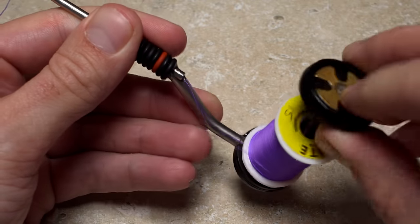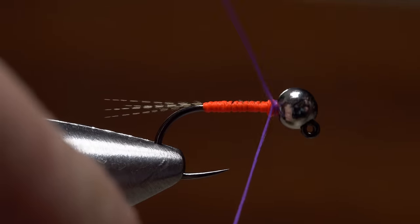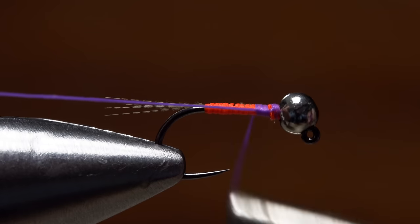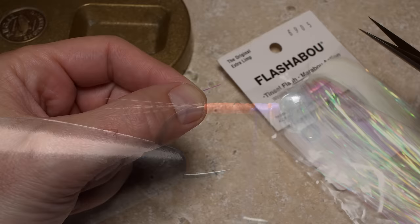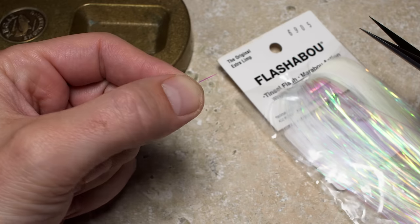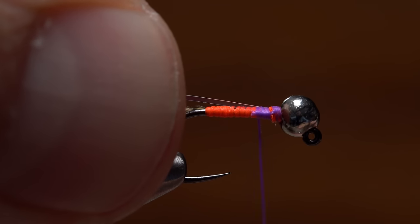Now load a bobbin with a spool of purple glow-bright thread. Start the thread behind the bead and take a few wraps rearward before snipping off the tag. Snip a single strand of flashaboo free from the hank and secure it to the hook shank with wraps of tying thread.